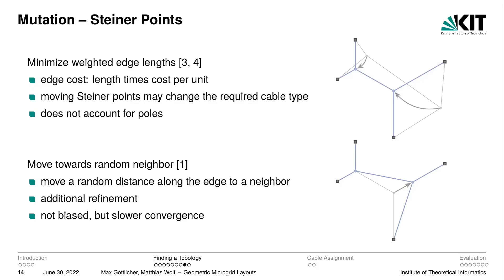The second mutation method considers the Steiner points, for which we have two different methods. The first minimizes the total weighted edge length, where the weight of each edge is the cost of the assigned cable type per unit. Unfortunately, moving Steiner points may change the required cable type because the cable resistance may change, and this method does not account for poles placed at discrete intervals. So we have a second method, applied with a certain probability, which moves one Steiner point by a random distance along an edge towards one of its neighbors as an additional refinement. It can be used on its own but converges much slower without the weighted edge length minimization.